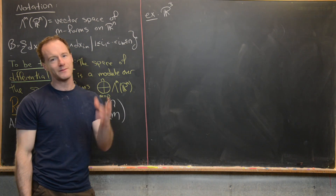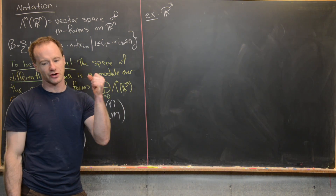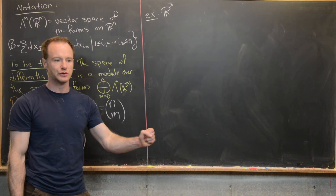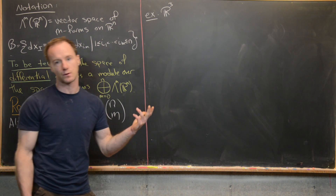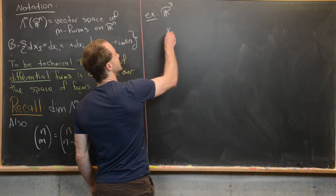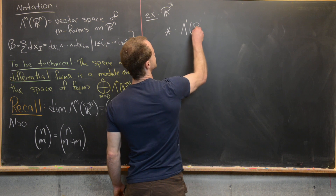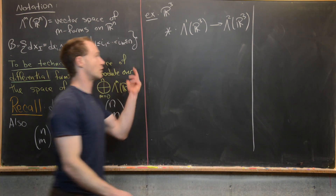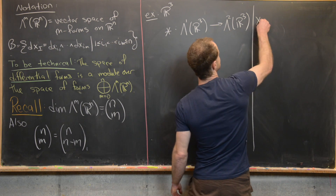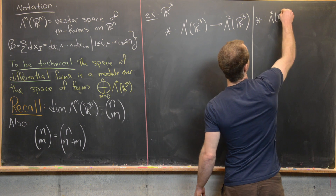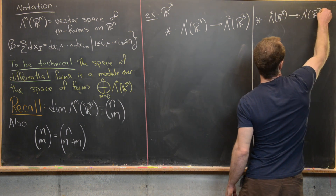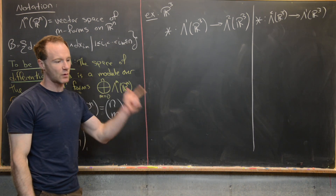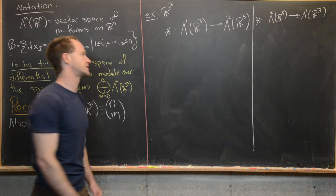Now we're going to look at R³. I'll skip the zero forms and three forms since those are trivial in general when working on R^N. That means we need to look at one forms and two forms. Notice one forms and two forms are dual to each other because one plus two equals three. We want to look at the action of the Hodge operator on one forms on R³, giving us two forms on R³, and also the reverse direction — what the Hodge operator does to two forms on R³, producing one forms.